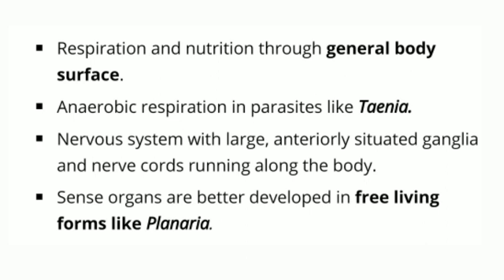Taenia is found as a parasite in the intestine. The nervous system has large anteriorly situated ganglia and nerve cords running along the body. Sense organs are better developed in free-living forms like Planaria, whereas they are reduced in parasitic forms.